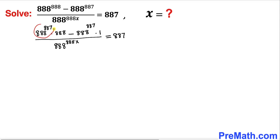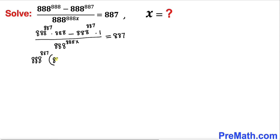Now we can see that 888^887 is common in both terms, so we are going to factor it out. Factoring out 888^887, we are left with 888 minus 1 inside the parenthesis, divided by 888^888 times x, equals to 887 on the right-hand side.